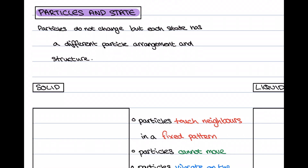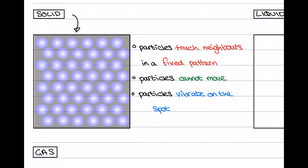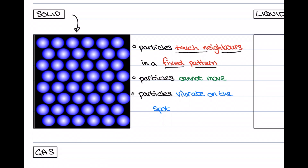Now we're going to talk about the interactions between particles in each state of matter that give rise to those properties — explaining why the same water acts so differently in the solid state compared to the gas state. The actual particles do not change, but in each state we have a different particle arrangement and structure. Starting with the solid: the particles are touching their neighbours in a fixed pattern, very, very close to one another. Because of this, we cannot move them any closer, which explains why we cannot compress the solid.